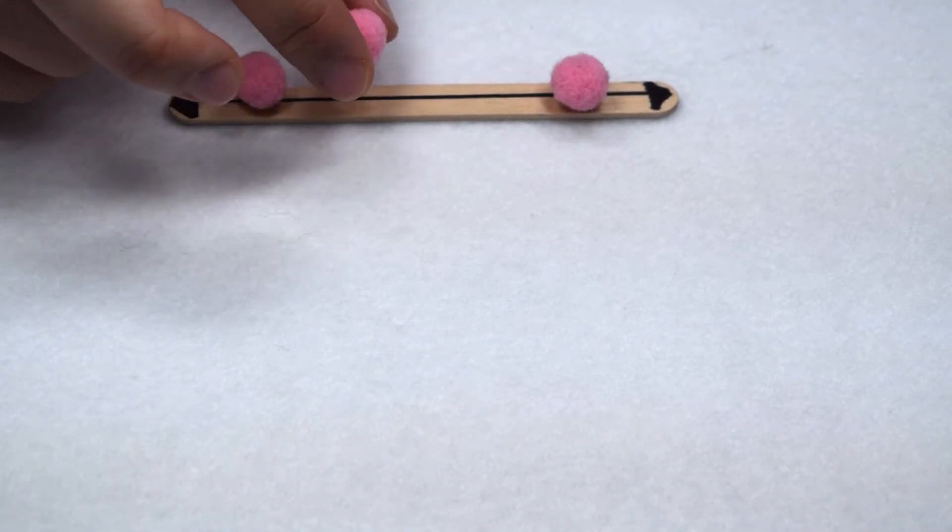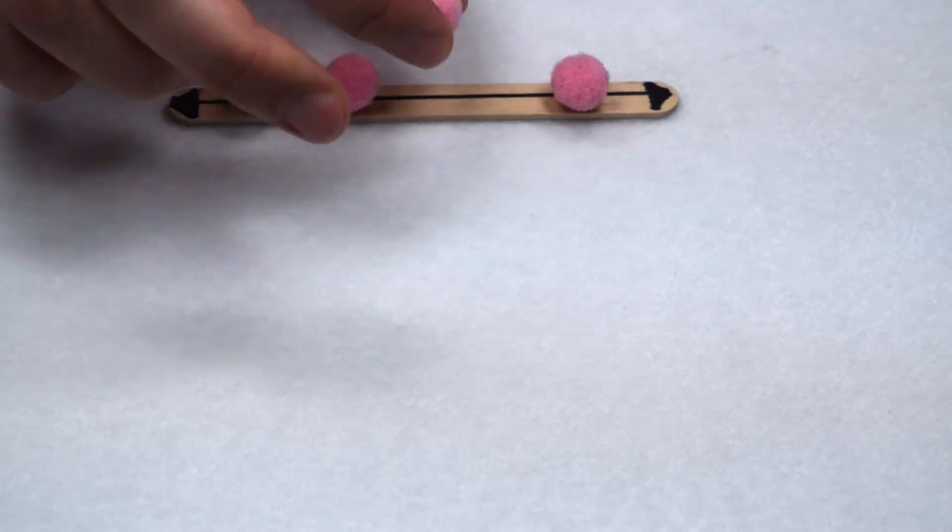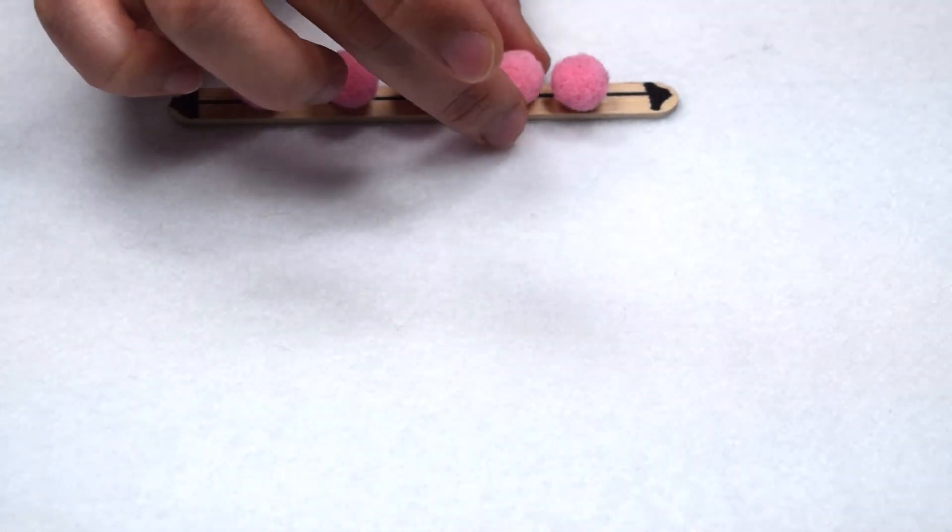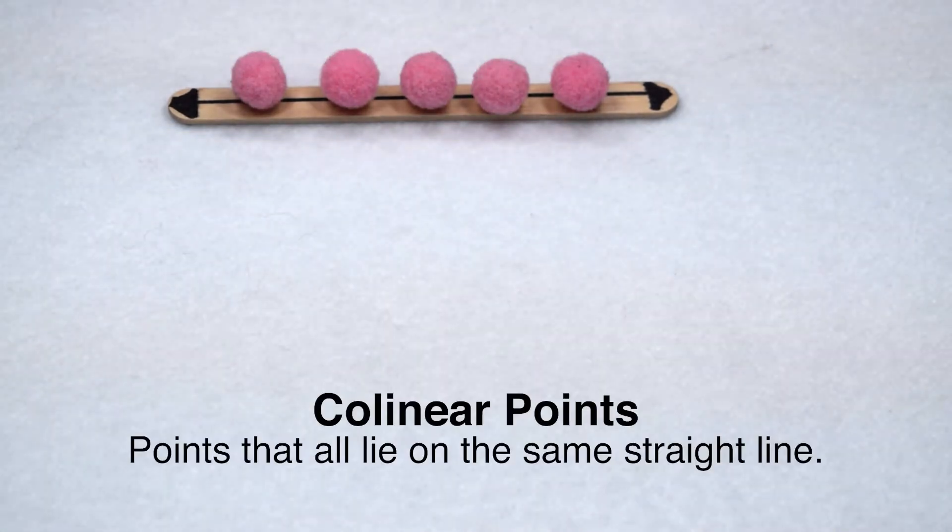Now on that line, there's more than two points. There's actually an infinite set of points. When we have an infinite set of points on the line, these are referred to as collinear points. Collinear points are points that all lie along the same straight line.